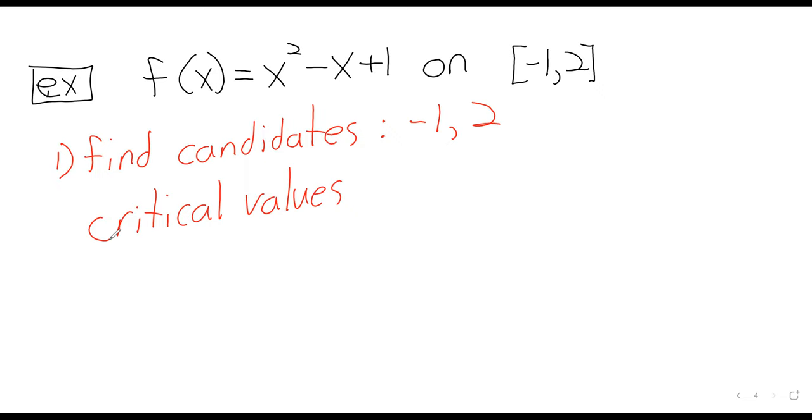First, we need to find the candidates. Two of our candidates are just sitting there. The endpoints can be absolute extrema, so we're going to have to end up checking -1 and 2. But those aren't, perhaps, the only candidates. If there are critical values, those are candidates as well.